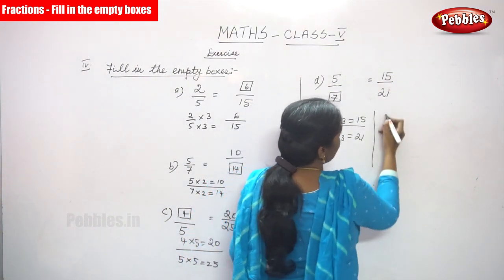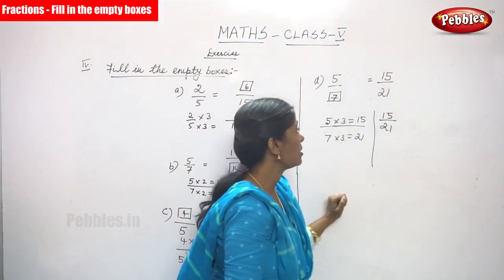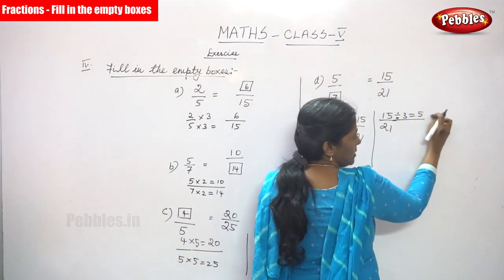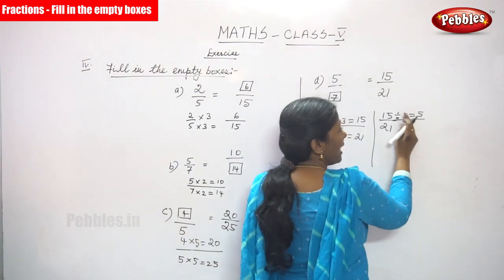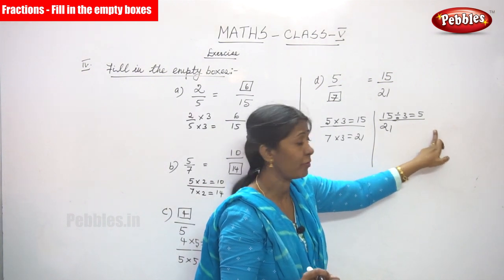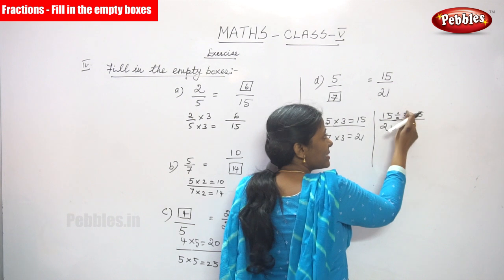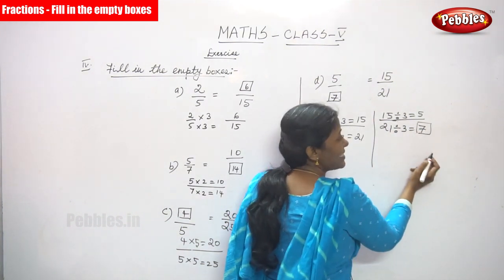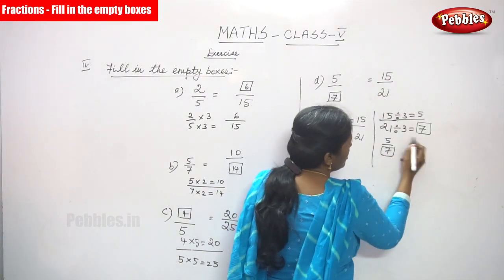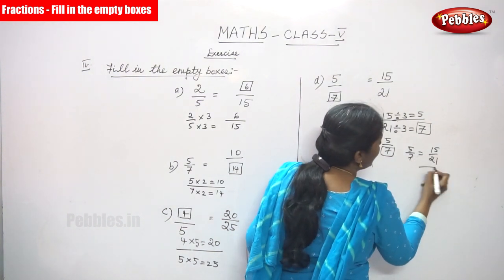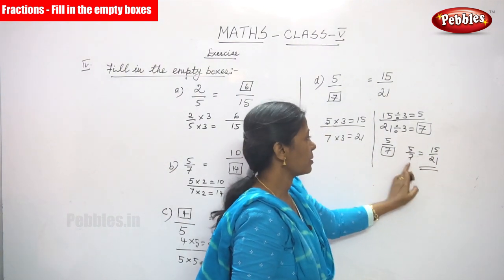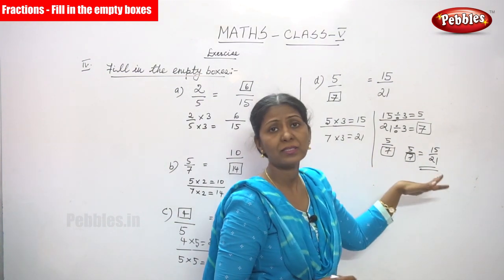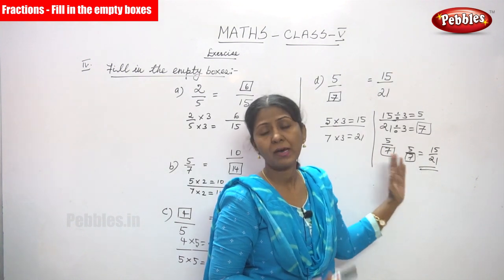So 5 by 7 equals 15 by 21 — equivalent fractions. You can also use the factor method: 15 divided by 3 gives 5, and 21 divided by 3 gives 7. So the answer is 7. Both methods — the multiple method and the factor method — work. Choose whichever is easy or convenient for you. I have taught you two methods; you can pick the one that suits you.